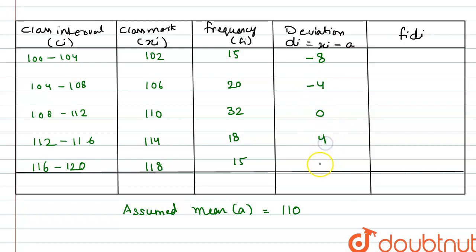Similarly it is 4 and this is 8. Now we have to find fi di. So 15 into minus 8 would be minus 120. 20 into minus 4 is minus 80. 32 into 0 is 0. 18 into 4 is 72, and 15 into 8 is 120.